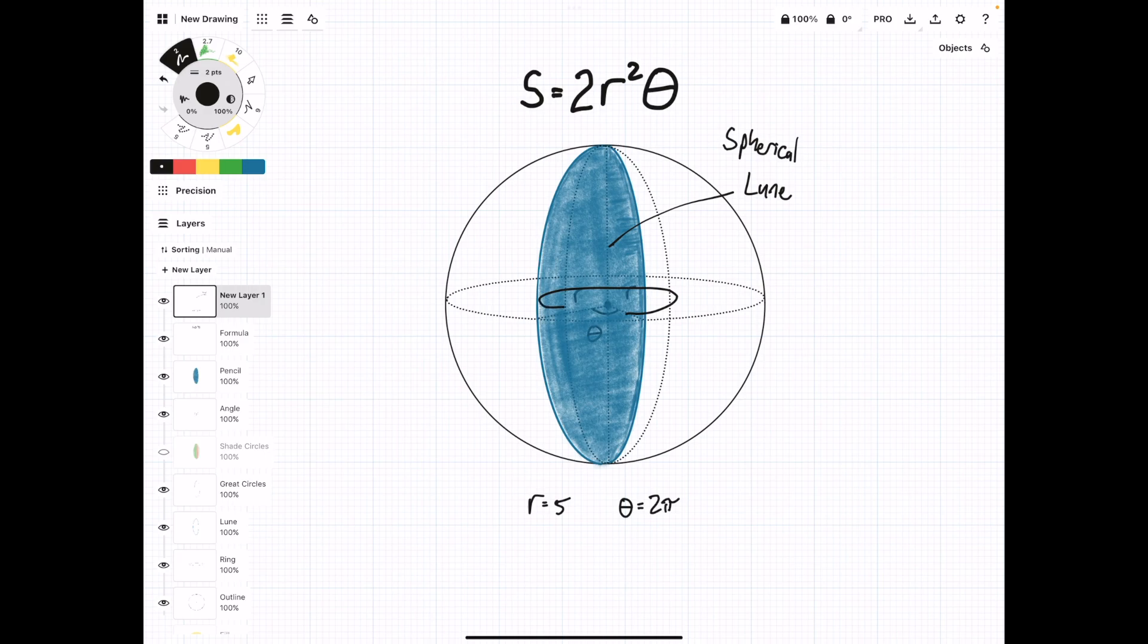When we rewrite our surface area formula, it's going to be 2r² times 2π. And then that's going to equal 4πr², which you should recognize as the surface area of a sphere formula. So pretty interesting, but it makes sense.